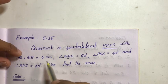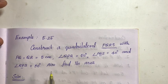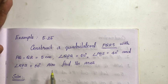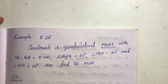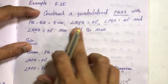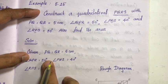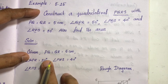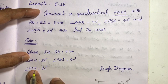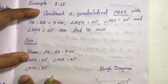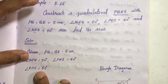Here the question gives two sides and three angles for the quadrilateral. Given: two sides - PQ and QR. Three angles: angle QPR equal to 50 degrees, angle PRS equal to 40 degrees, angle RPS equal to 80 degrees. So the given measures are listed.